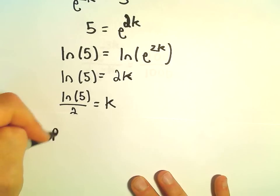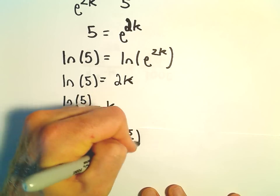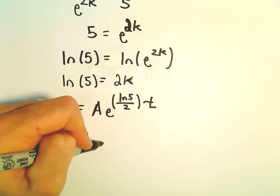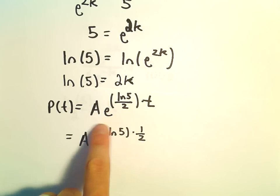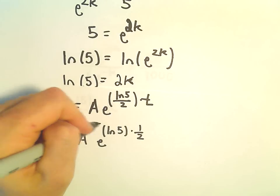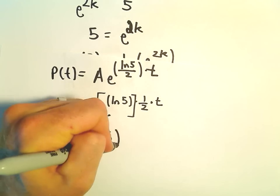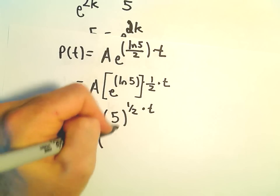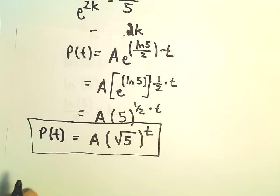We know the population at time T is A times E to the K times T, and K is the natural logarithm of 5 over 2. We can simplify this as E to the natural logarithm of 5 times one half times T. Since E to the natural logarithm of 5 is just 5, we still have the one half power times T. So 5 to the one half is the square root of 5, and we get A times the square root of 5 to the T — a slightly more simplified equation to describe the population.